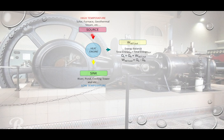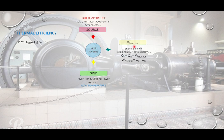From the source — which could be solar energy, a furnace, geothermal, etc. — heat is supplied to the heat engine, which converts some heat energy to work output. Net work output equals work output minus work input, and the remainder is heat rejected to the sink. According to the second law of thermodynamics, not all energy supplied can be converted to useful work, so a large portion is rejected to the lower-temperature sink. This is why thermal efficiency is always below 50 percent.